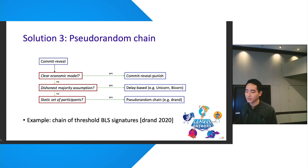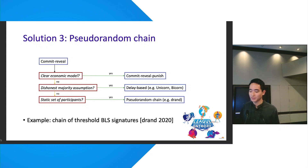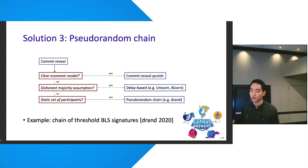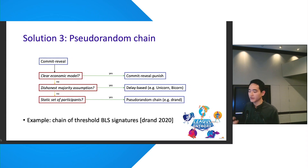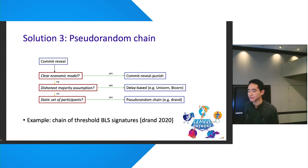If we need to rely on honest majority to recover, we ask whether we have a static or dynamic set of participants. If the set of participants doesn't change too frequently on an epoch basis, we have a static set. In that case, we can leverage a class of DRBs using pseudorandom chains — for instance, a chain of threshold BLS signatures, as in the DRAND project operated by the League of Entropy, a consortium of about 20 operators outputting a beacon once every 30 seconds, currently live.